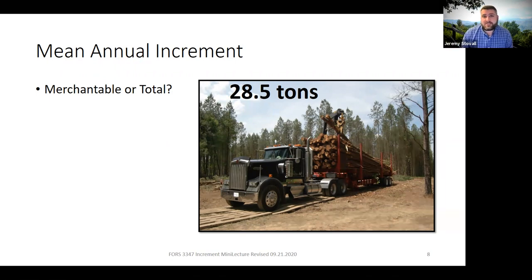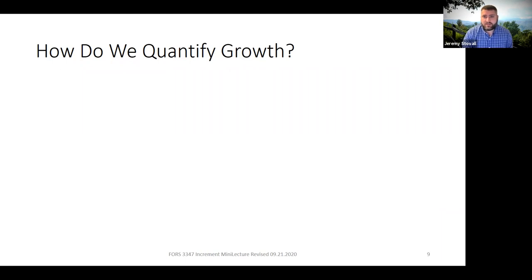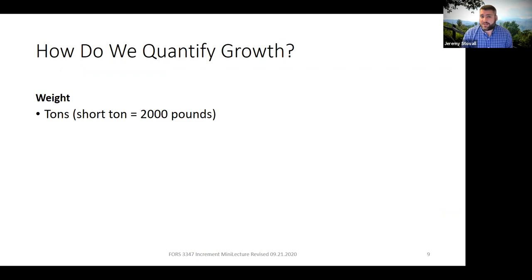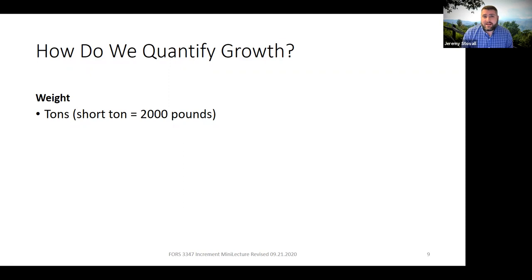A typical log truck in East Texas will carry 28.5 tons of wood. Commonly we use weight in tons — where a ton is 2,000 pounds, sometimes called short tons. Mills often use this unit because they can weigh log trucks driving in, making it very efficient. In Texas, the gross weight — truck plus trailer plus all logs — can only be 80,000 pounds, or 40 tons. Many loggers buy a permit allowing 5% over that, which with typical truck and trailer weights gets to about 28.5 tons of actual wood load.